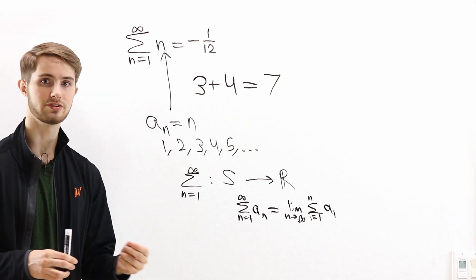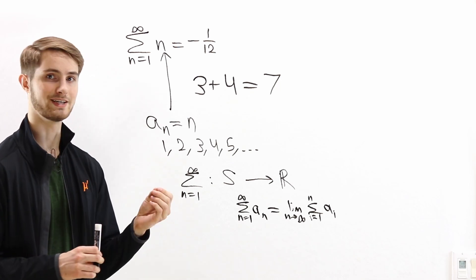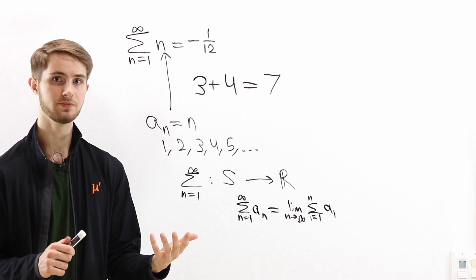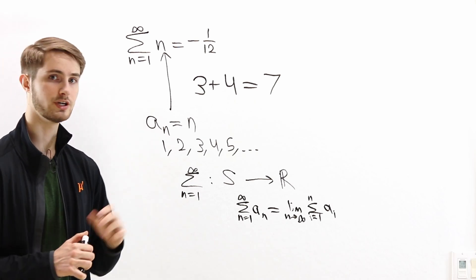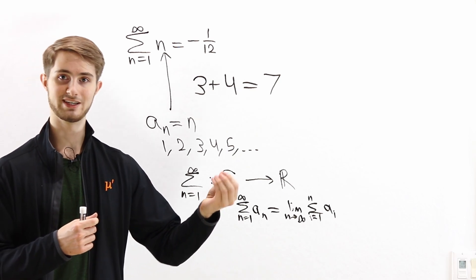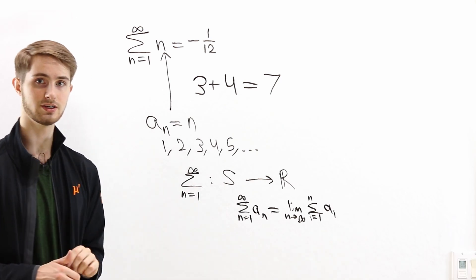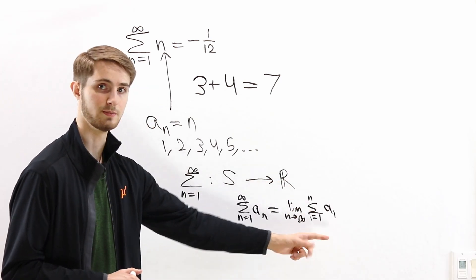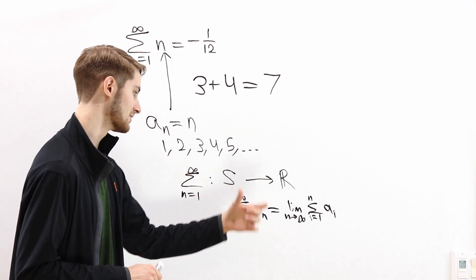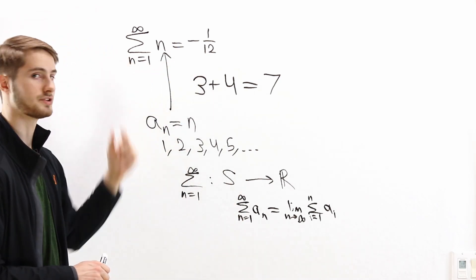A similar thing happens in analysis when you start thinking about different types of integrals. The definition of integral used most commonly in an intro calculus class is the Riemann integral, which works for a lot of different functions, but there are certain functions that don't have a Riemann integral. The most common generalization is the Lebesgue integral, which gives the same answer as the Riemann integral when that exists, but is also defined for some functions where we can't take the Riemann integral. There's a similar situation with infinite sums — sometimes the original definition doesn't give us an answer, but there are ways to define a different function that gives the same answer for convergent sums while also giving results for sums that were divergent before.